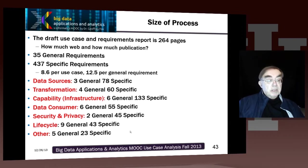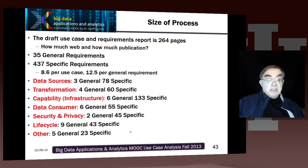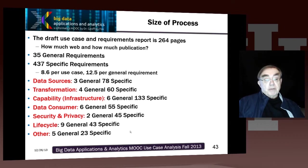Data sources: three general requirements and 78 specific. Transformation: four general and 60 specific. Capability or infrastructure: six general, 133 specific. Data consumer: six general, 55 specific. Security and privacy: two general, 45 specific. Life cycle: nine general, 43 specific. And other — a sort of bucket for things we didn't know what to do with — five general, 23 specific.